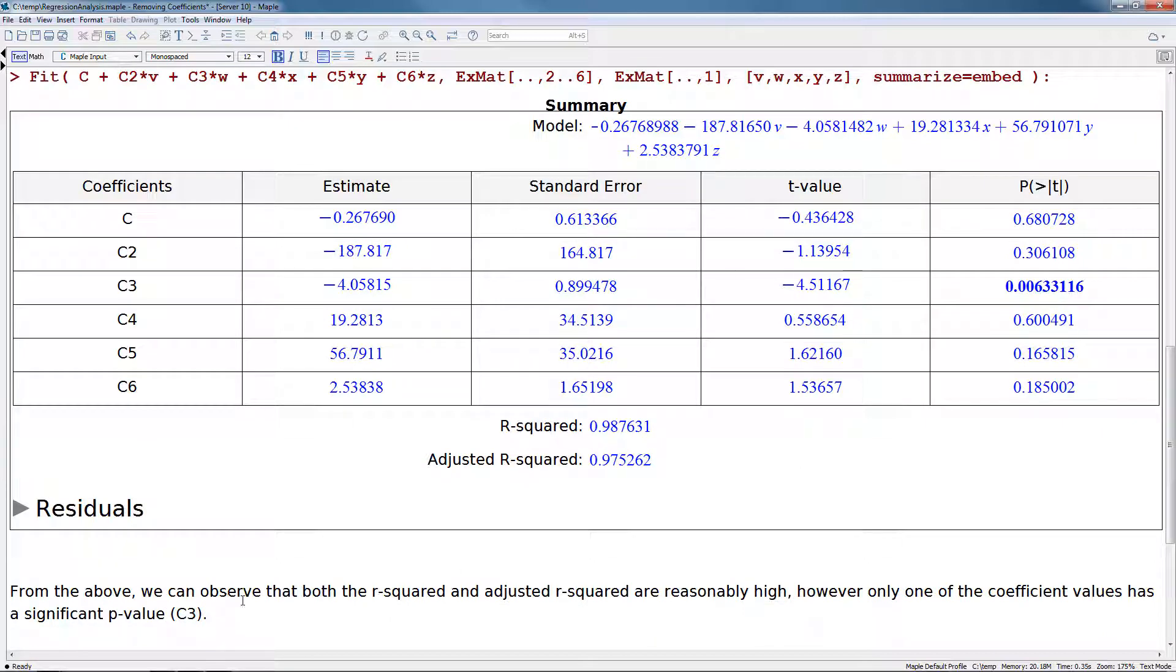Now from the above, we can also observe that both the R squared and adjusted R squared are reasonably high. However, as we saw before, only one of the coefficient values has a significant P value. So this is a case where we can start to experiment. We can start to remove some of our coefficients to see if it affects the adjusted R squared value at all.